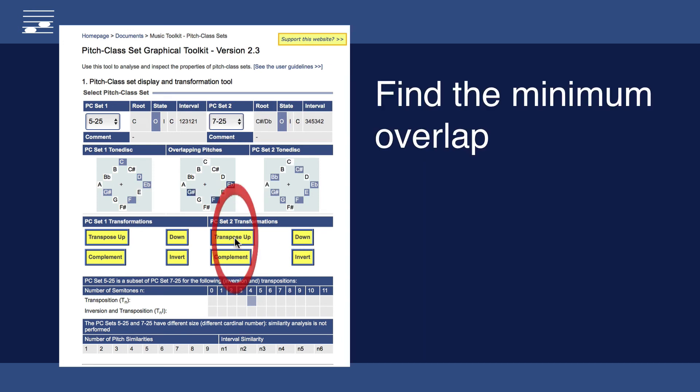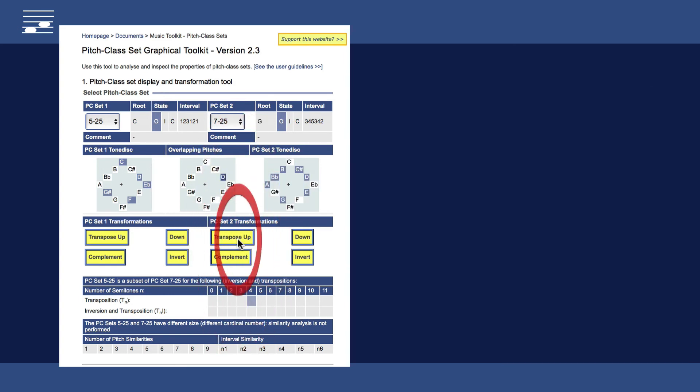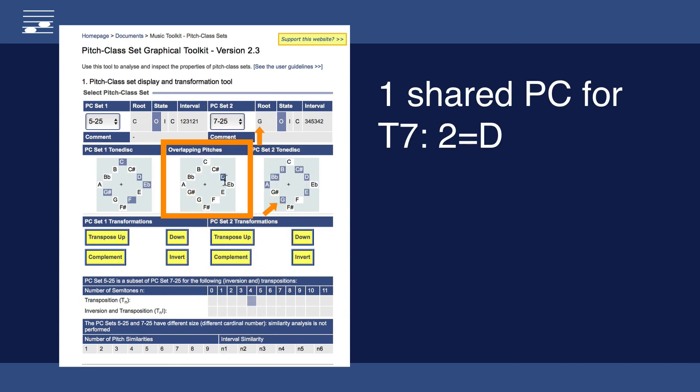Another composition technique is based on the minimum overlap between two sets. We find one common pitch class, the G sharp, after transposing the set 7-25 by four semitones. There's another case of single pitch overlap at seven semitones transposition.